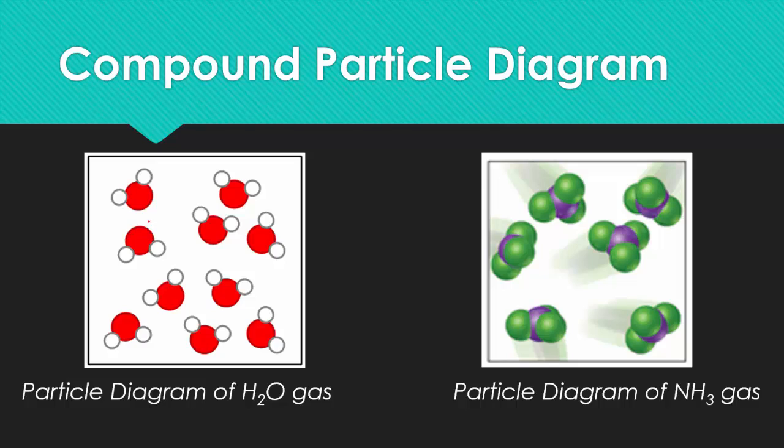On the left, we have a particle diagram of water vapor. So oxygen is going to be our big red sphere, and the hydrogens are going to be the white spheres. You know that this is all water because they all have that same traditional Mickey Mouse shape. They all have one red sphere and two white spheres.